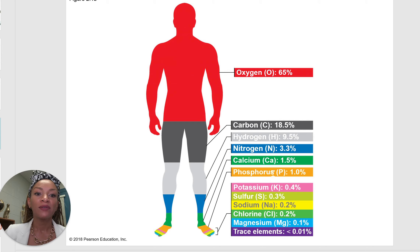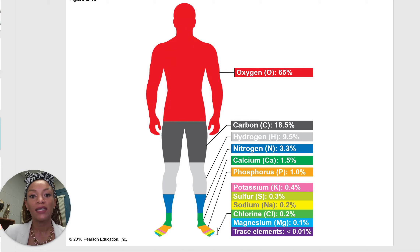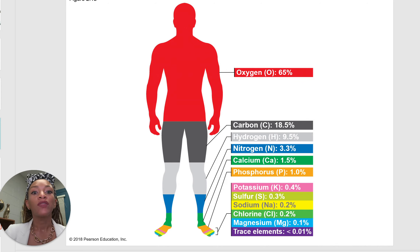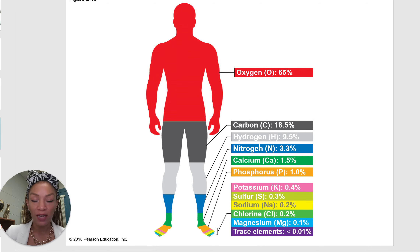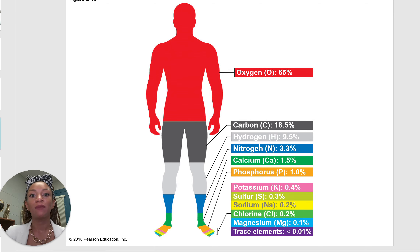We also have some calcium and some phosphorus. So these are the top six elements that make up the human body, with oxygen, carbon, and hydrogen being the most abundant elements in our bodies.